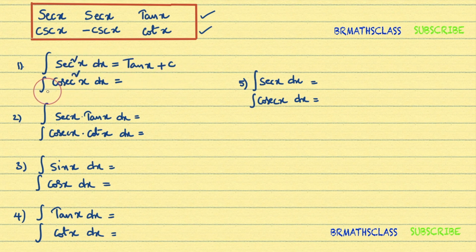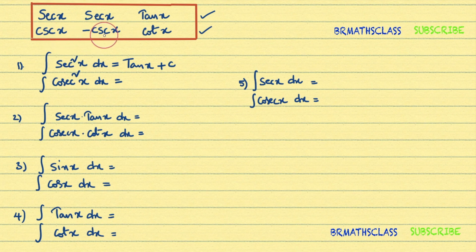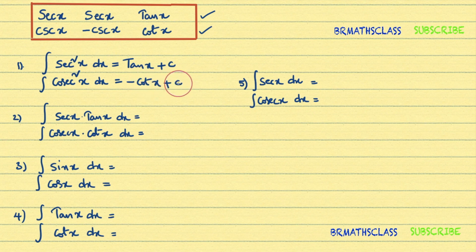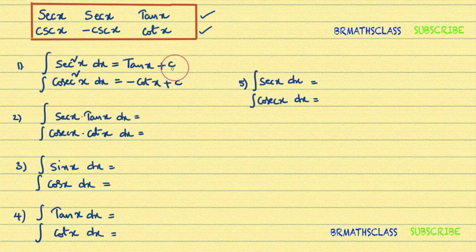The second formula: integral of cosecant squared x dx. We know that cosecant squared x is cosecant x times cosecant x. Observing the second row of the table: cosecant x times cosecant x — what is remaining? Remaining is minus cot x. So integral of cosecant squared x dx is minus cot x plus C. By using this trick we can memorize these two formulas very easily.